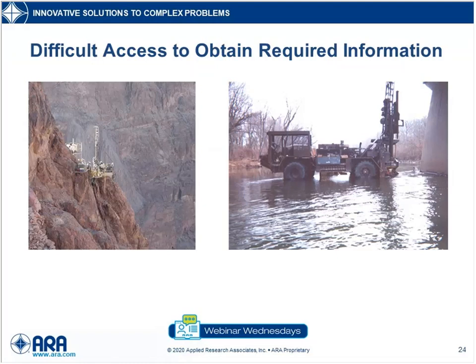Two extreme situations for getting information: one on the right shows a swamp buggy rig, and one on the left is a rig on a mountain that had to be helicoptered in. The point is that for every infrastructure feature we construct, we have the equipment and tools to get factual information where we need it. The cost, complexity, and challenges of achieving that might be overwhelming from a budgeting standpoint, but the technology exists.